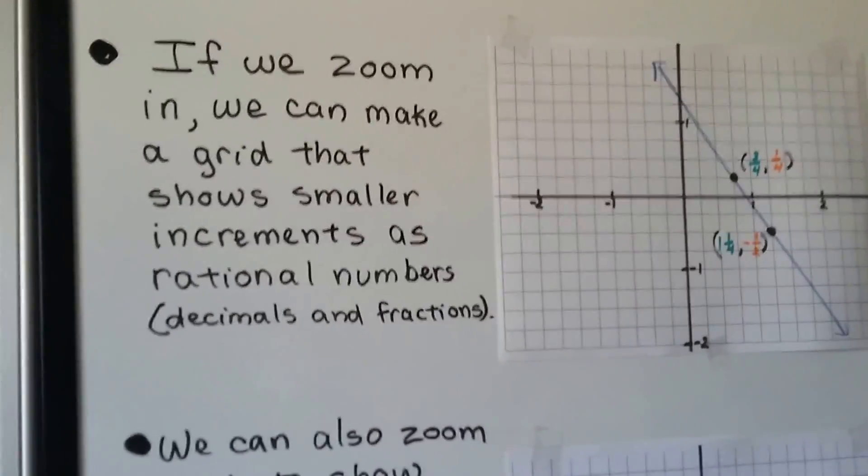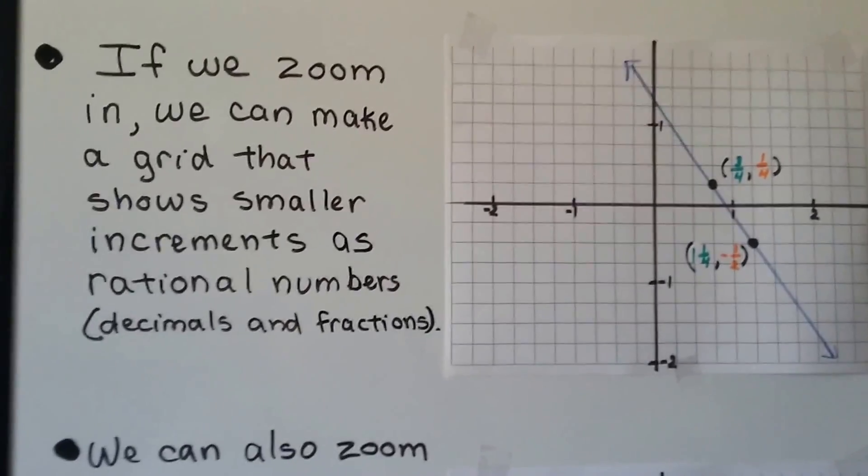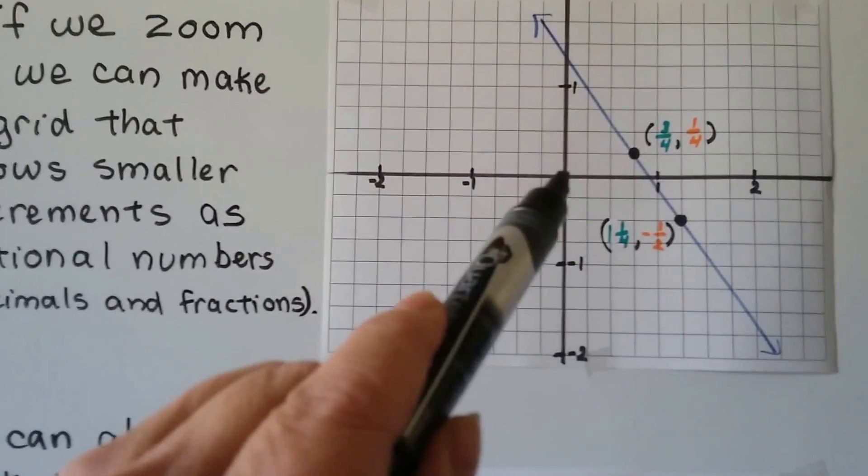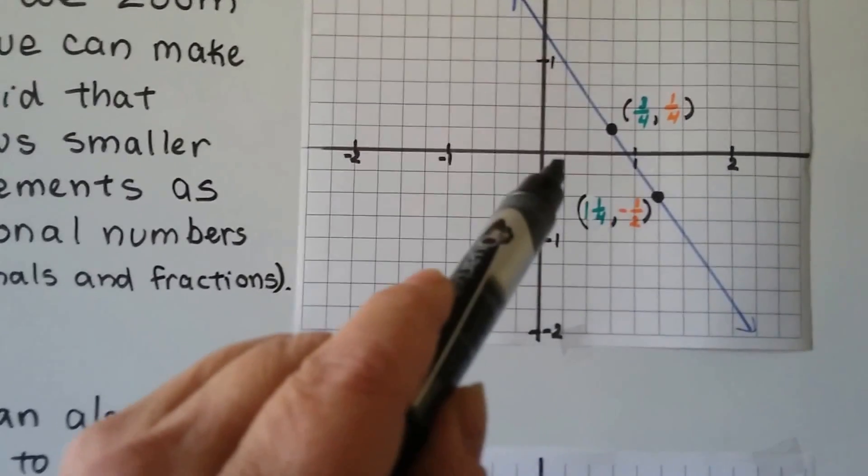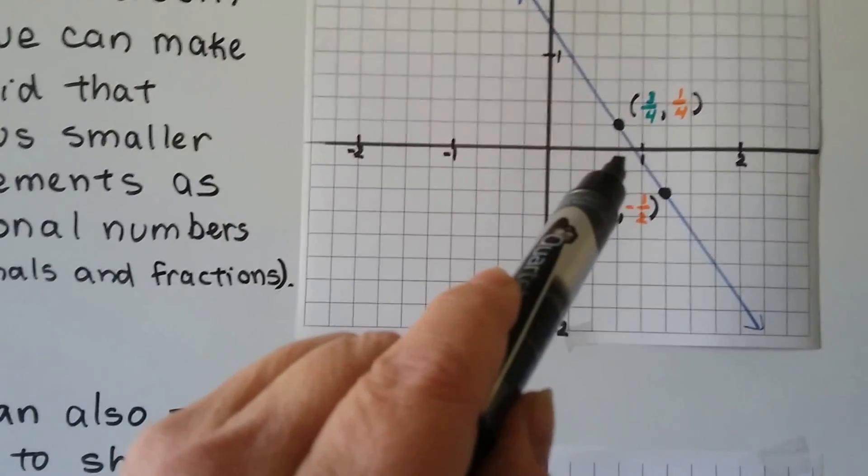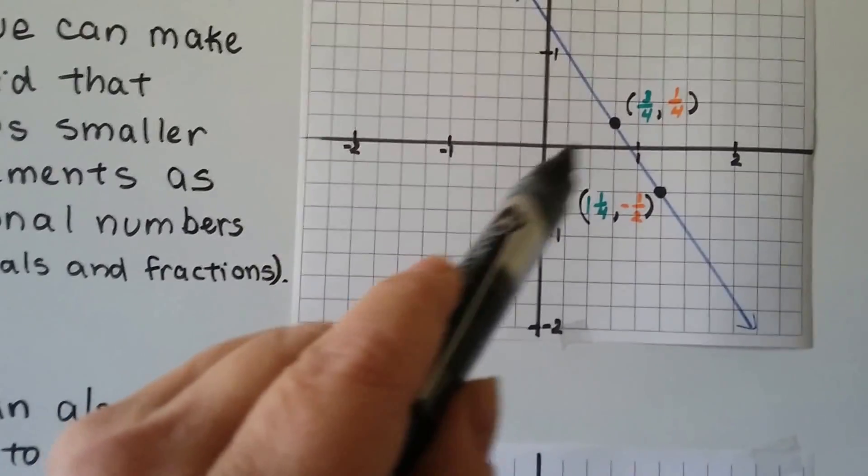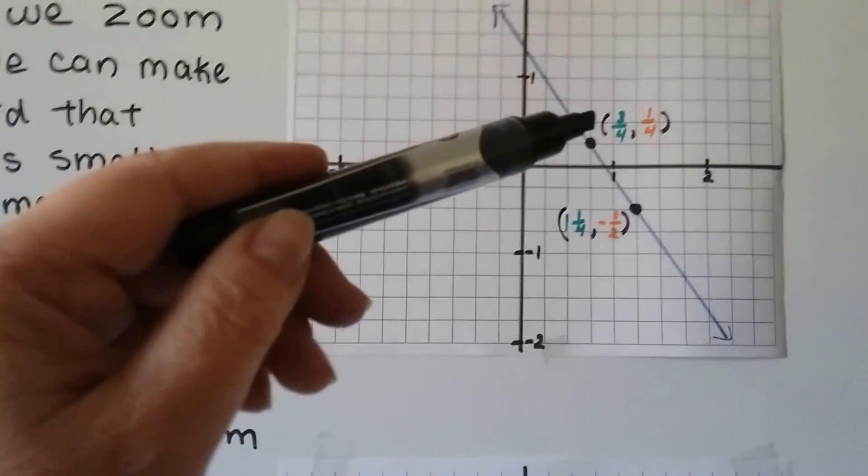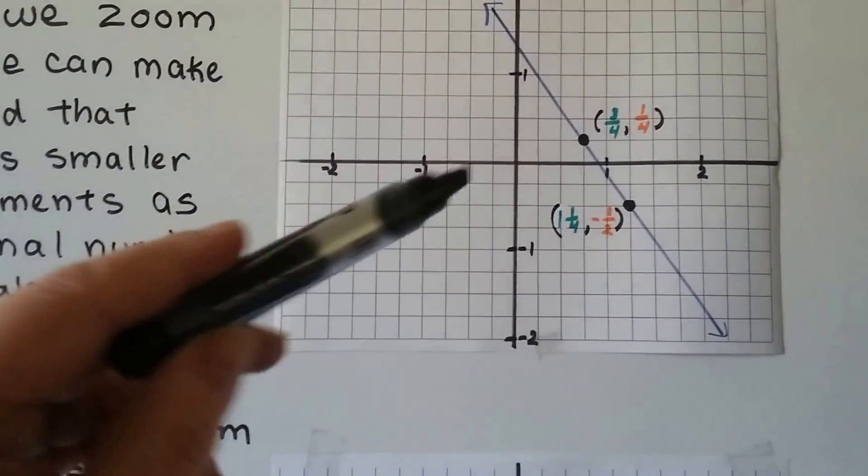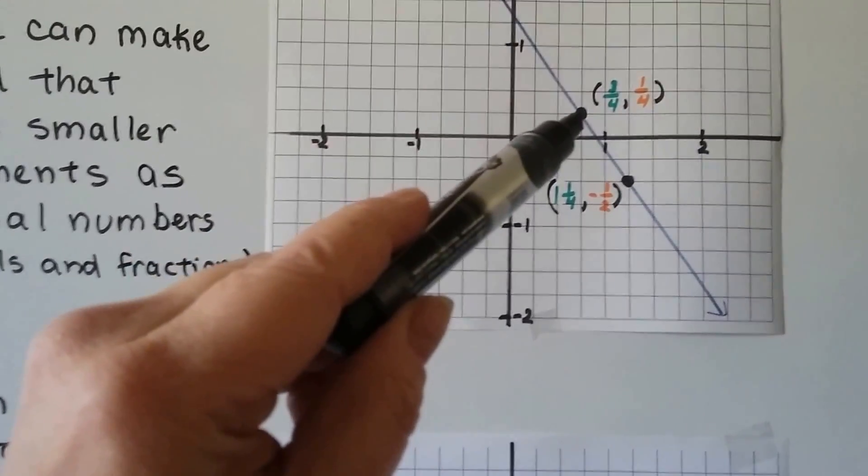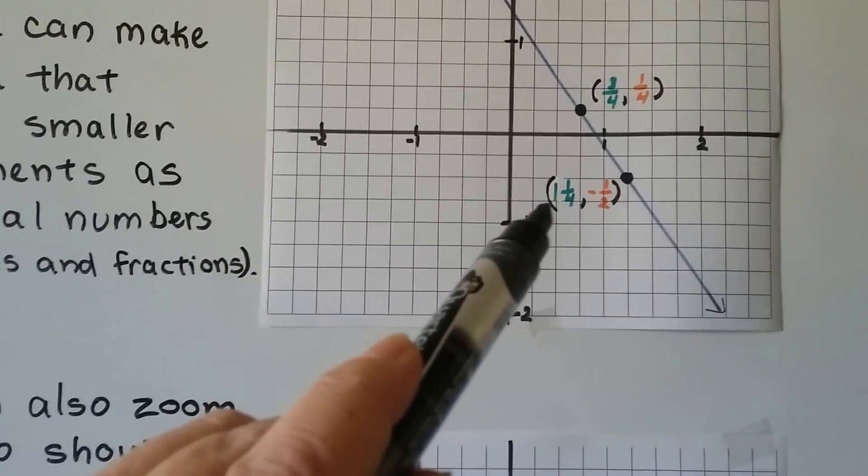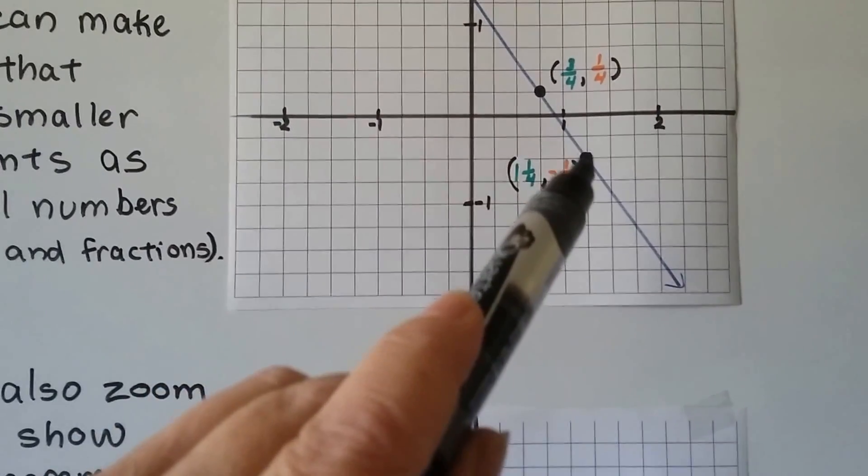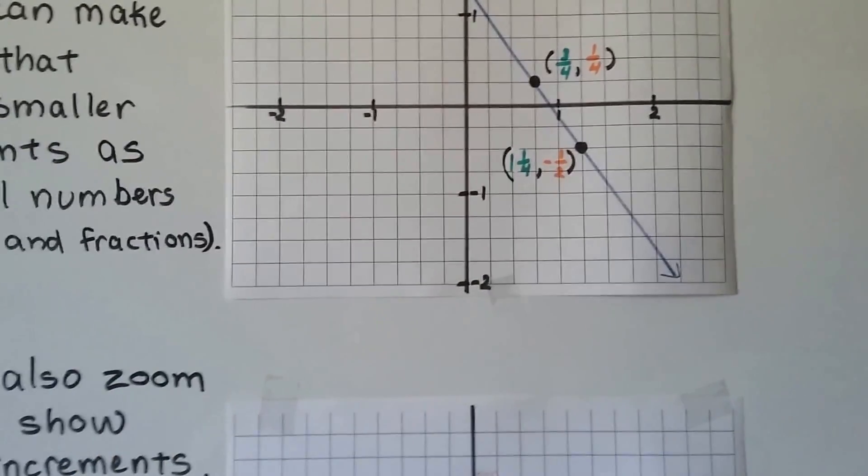If we zoom in, we can make a grid that shows smaller increments as rational numbers, like decimals and fractions. So instead of having each box equal a whole number, we could say 4 boxes equals a 1. So we could do 1 fourth, 1 half, 3 fourths. We could have said 3 boxes and made each one a third, or 10 boxes and made each one a tenth. So if we wanted to plot 3 fourths and 1 fourth, 3 fourths would be right here and 1 fourth would be right there. If we had x as 1 and 1 fourth and y as a negative half, 1 and 1 fourth would put it there and half would be here for the negative half.